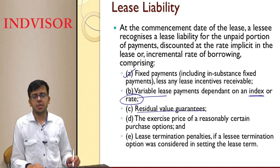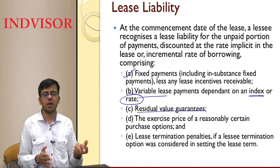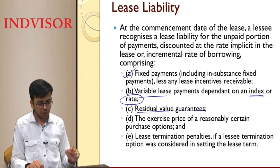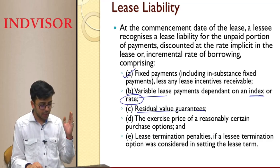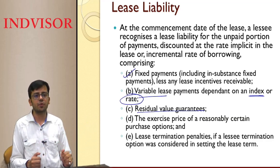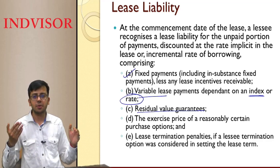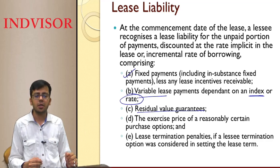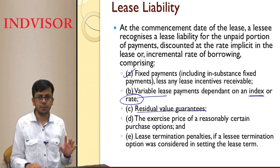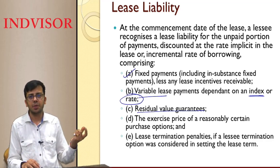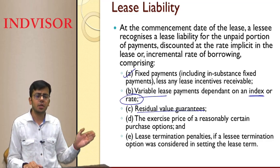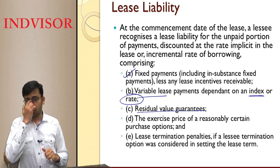Additional components of lease liability include: any guaranteed residual value — where the lessee assures a minimum payment for wear and tear on the asset at the end of the lease term; the exercise price of a reasonably certain purchase option (which is different from residual value guarantee); and a lease termination penalty — if you are planning to terminate the lease, include the penalty; if not planning to terminate, don't include it.